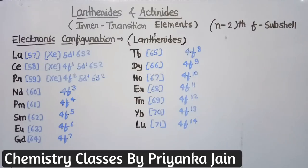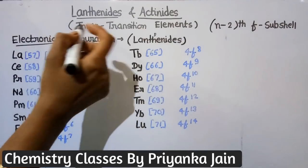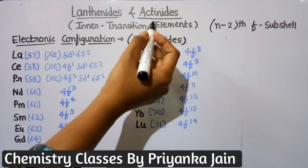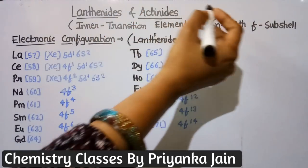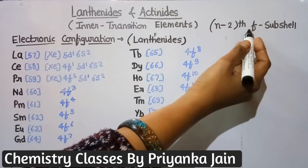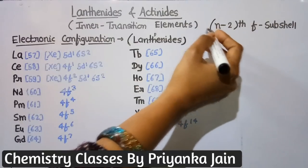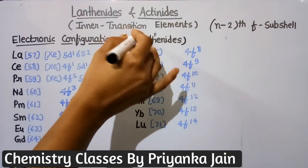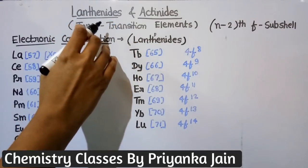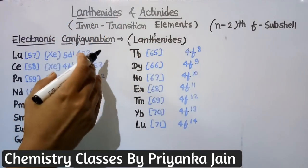In this video we will study about the lanthanides and the actinides, the F-block elements. Lanthanides and actinides are also known as the inner transition elements because the electrons are filled in the (n-2)f subshell, so these are deeply embedded. Hence they are known as the inner transition elements. The lanthanides are more important as compared to the actinides.